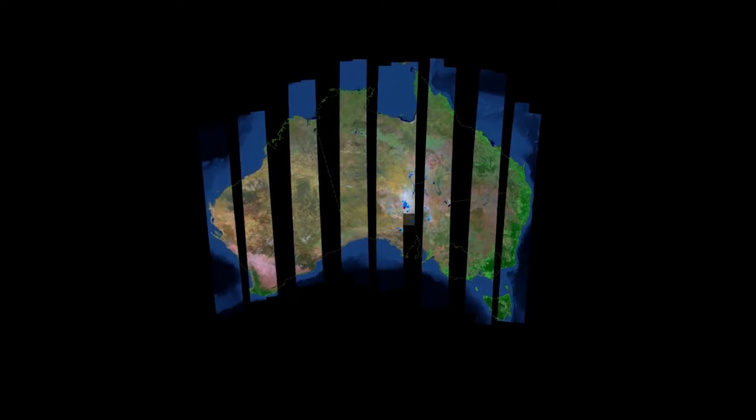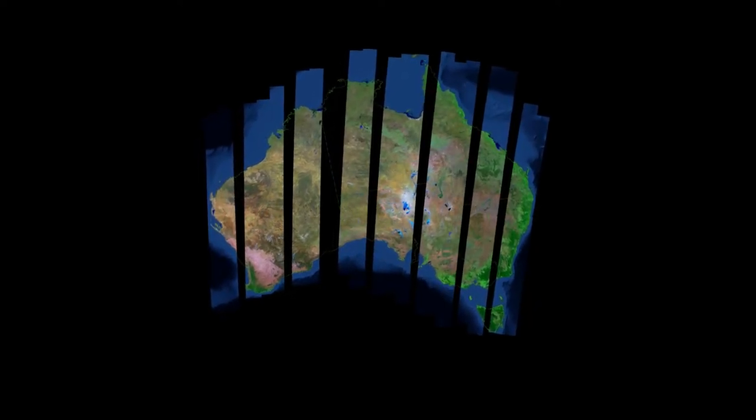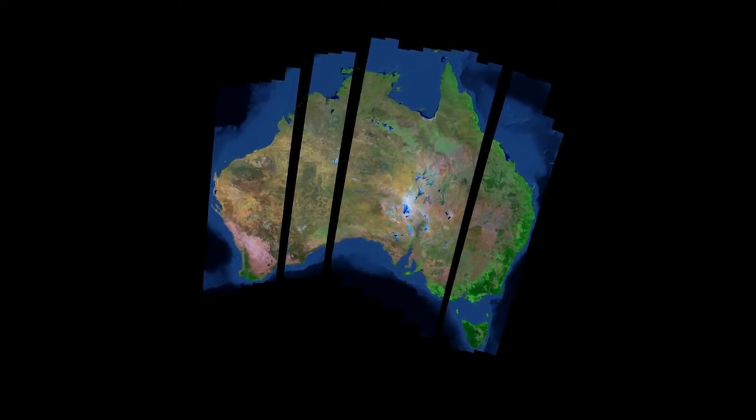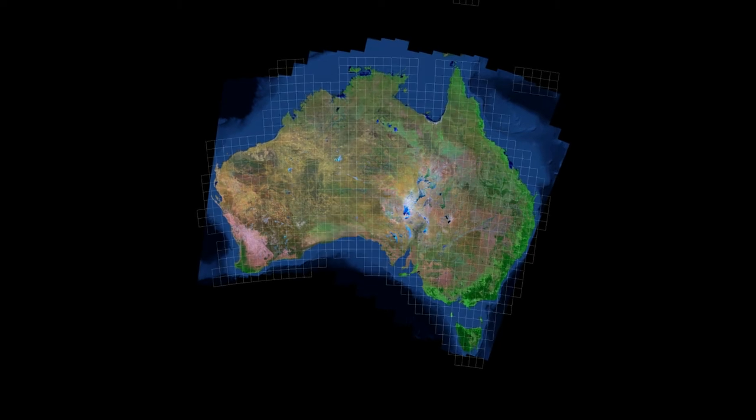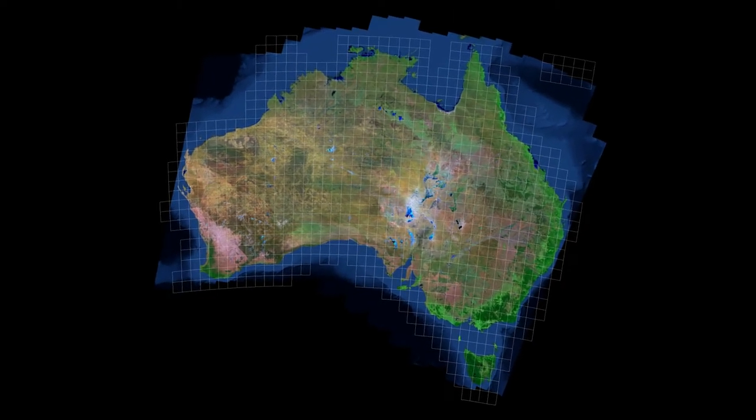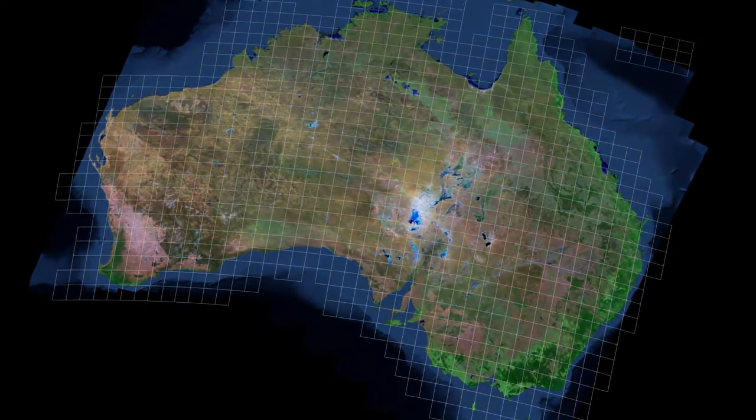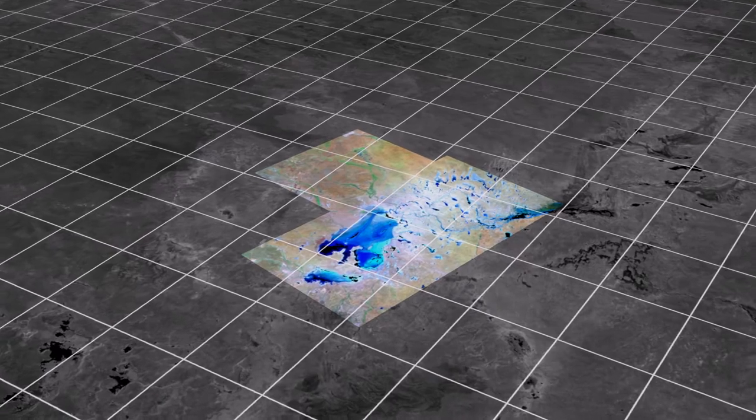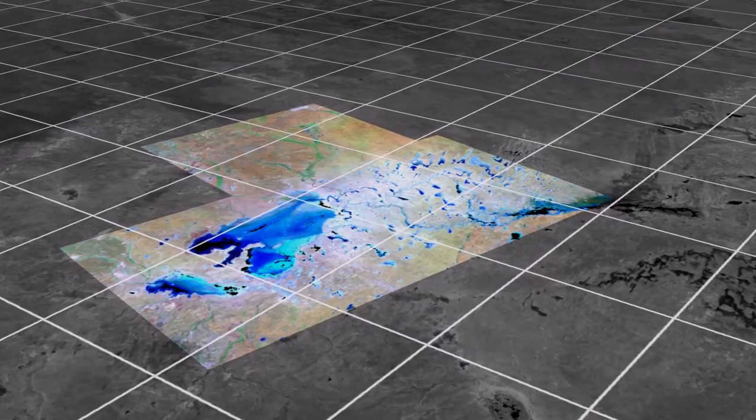To manage the large volumes of Landsat imagery covering the Australian continent, Geoscience Australia, in collaboration with the CSIRO and Australian National University, have developed the Australian Geoscience DataCube, a geospatial cataloguing system run on the National Computational Infrastructure Supercomputing Facility.